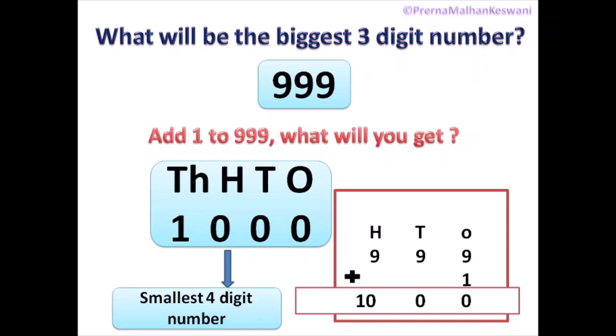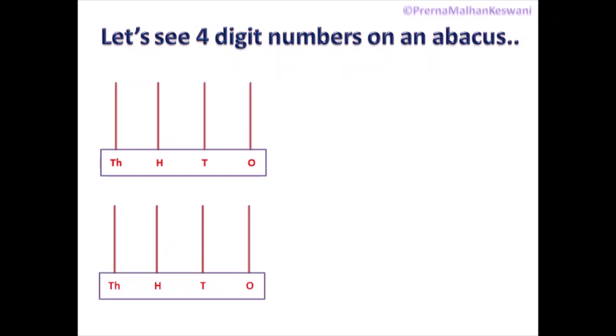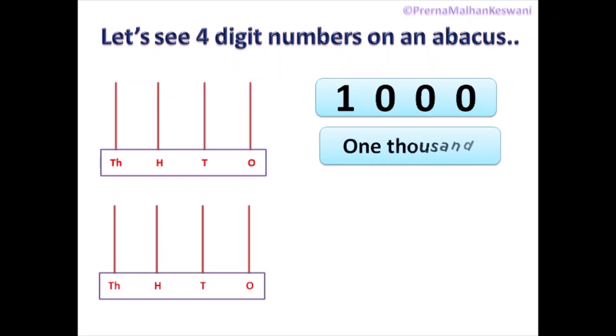Now, let's see how to depict these four-digit numbers on an abacus. In the abacus, there are four sticks. The first stick is at 1s place, the second is at 10s place, the third is at 100s place, and the fourth is at 1000s place. These four-digit numbers start with 1,000. So how to depict 1,000 on an abacus? There is only 1 in the 1000s place, so we put 1 bead in the 1000s place. The rest — 100s, 10s, and 1s — have 0, so we do not put any bead there.